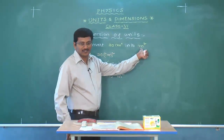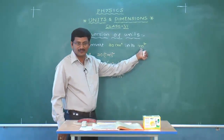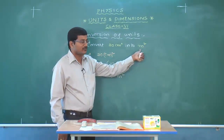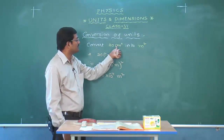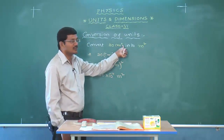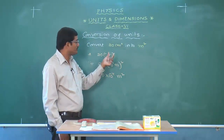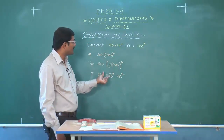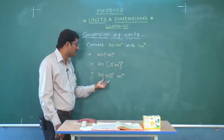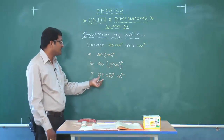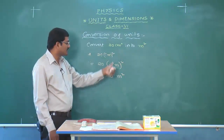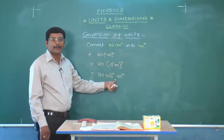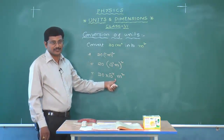So I already got meter squared, which is what was asked. Be careful: when converting derived units like centimeter squared, the square applies to the entire prefix too — centi squared gives 10 to the power of minus 4, not just minus 2. This is the value of 20 centimeter squared in meter squared.